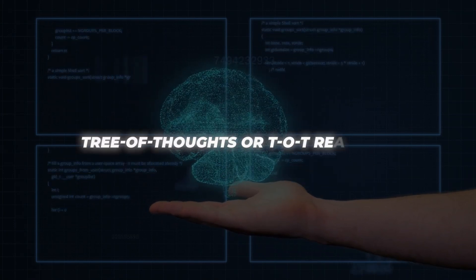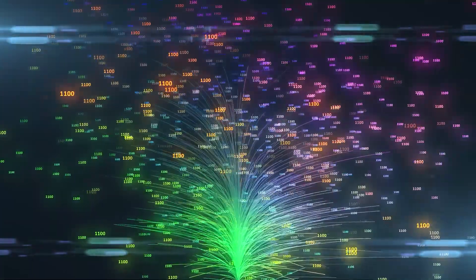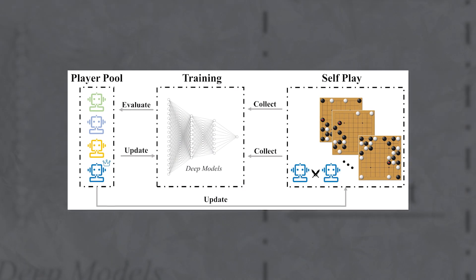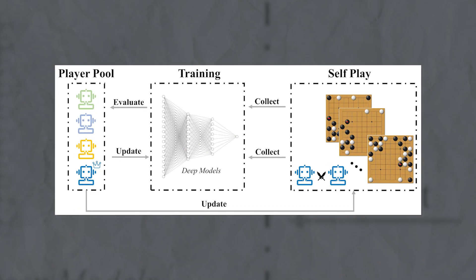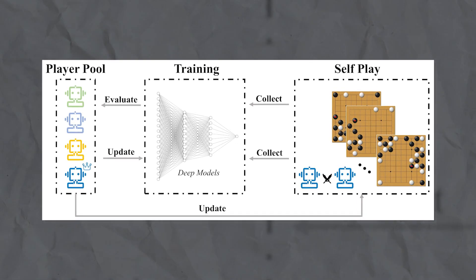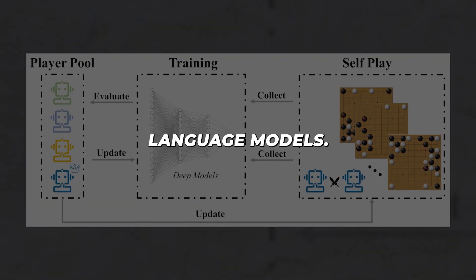This is where Tree of Thoughts or TOT reasoning comes in. Some speculate Q* reasons via Tree of Thoughts, linking deep reinforcement learning in AlphaGo, self-play and look-ahead planning. Self-play has the agent face itself to improve. Look-ahead planning predicts future actions' impacts. Research is needed to know if such concepts enable leaps in large language models.